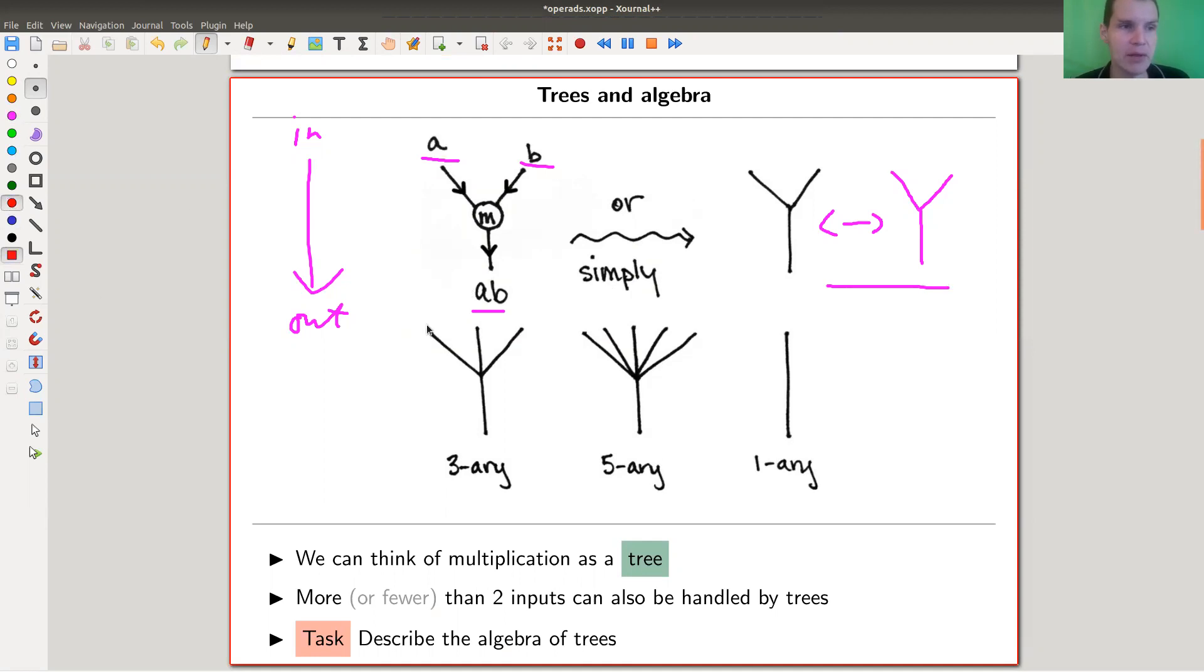So two inputs and one output. So reading now from bottom to top. So here's in, and here's out. So this will be the same for all my tree-type pictures. So two inputs, one output, you could think of this as a form of multiplication, kind of modeling multiplication in a more topological or graphical fashion by drawing this letter Y or whatever you want to call it.